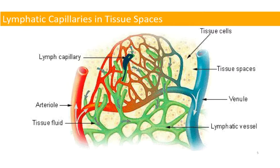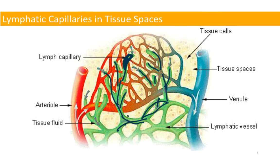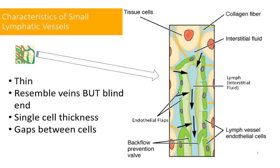Lymphatic capillaries are finger-like structures threaded through our capillary beds. Like vascular capillaries — where 'vascular' refers to blood vessels in particular — lymphatic capillaries spread throughout our tissues and come back together to form larger and larger vessels. Looking at lymphatic capillaries up close, we see that they're very thin, made of squamous epithelial cells, but unlike most vascular capillaries, these are quite leaky — there are gaps between the cells.